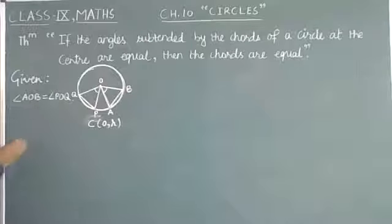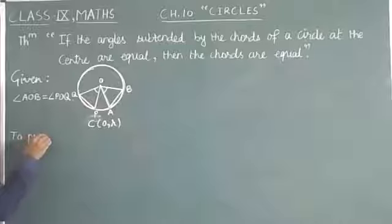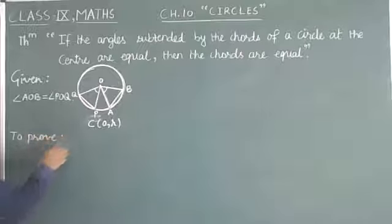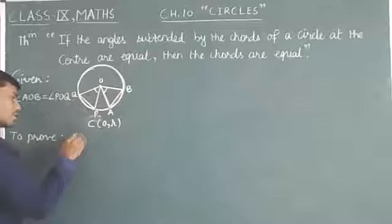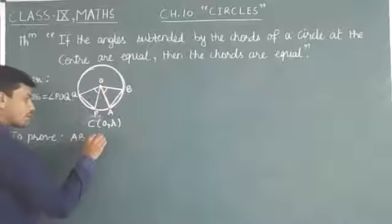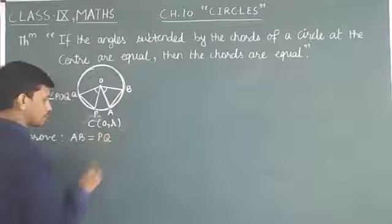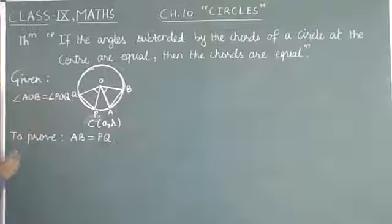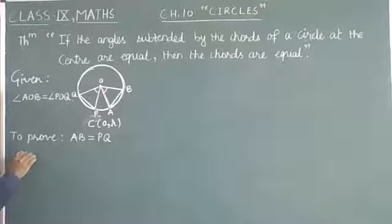For this, we have to prove that the chords are equal, meaning AB equals PQ. So let's check how this could be proved.